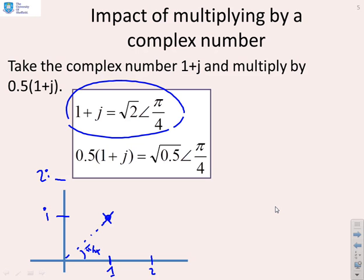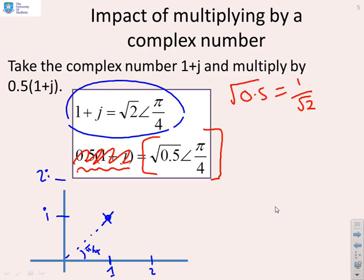I'm going to look at this other complex number in modulus argument form. It's got a modulus, the square root of 0.5. Now for those people who don't like it, that's the same as 1 over root 2, if that makes it easier for you to work with. And it's got a phase of pi by 4.